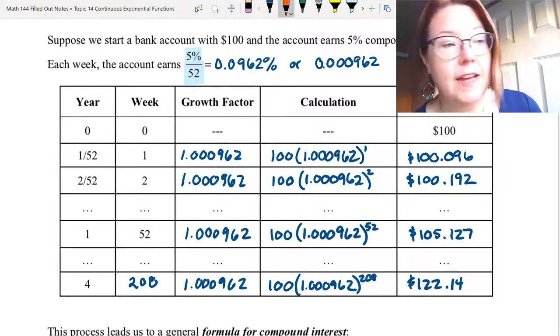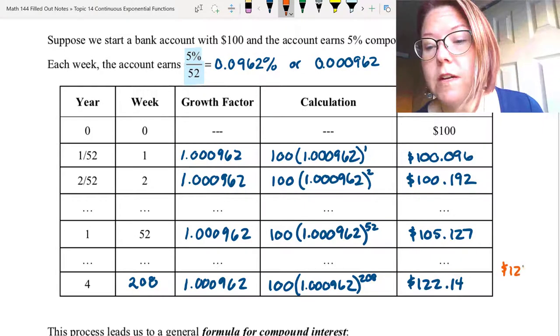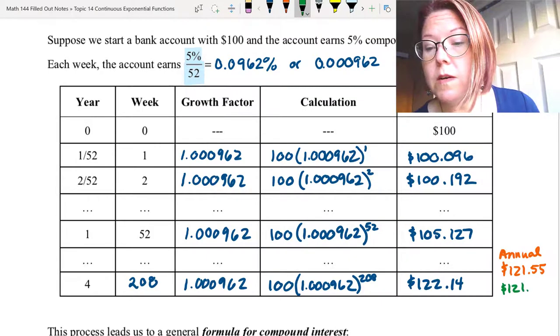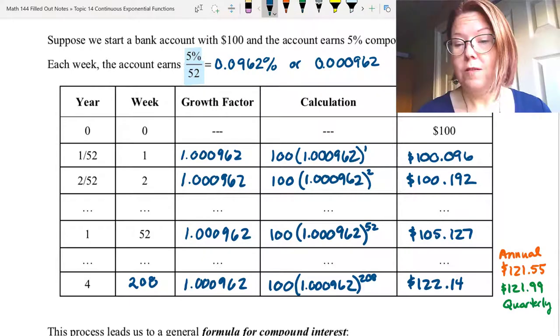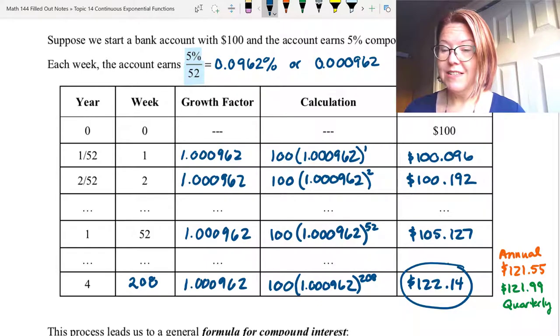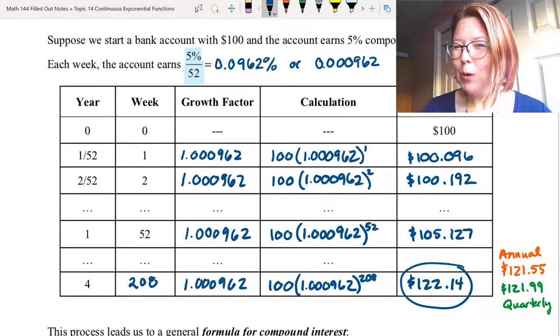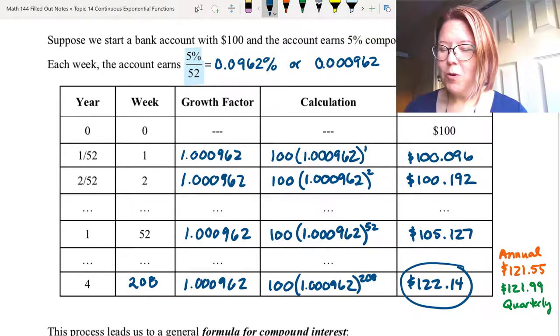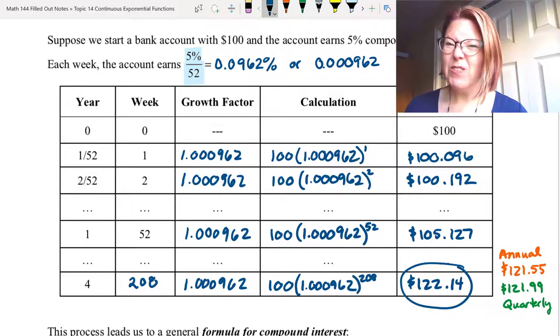When we calculated the annual interest, it was $121.55. Our calculation with quarterly compoundings was $121.99. Here, compounding weekly, we have $122.14. So you can see we did make a little bit more, but only 15 cents more by compounding weekly. So while it's still growing, it's not growing by very much. So when we went from annual to quarterly, we gained 44 cents. When we went from quarterly to weekly, we only gained 15 cents.